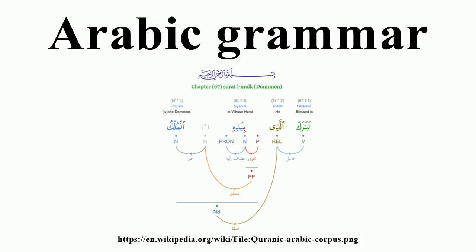Examples include: from kitab (book) — kitabi (my book), kutubi (my books), kitabay (my two books); from kalima (word) — kalimati (my word), kalimati (my words); from dunya (world) — dunyaya (my world); from qadin (judge) — qadiyya (my judge), qudati (my judges); from mu'allim (teacher) — mu'allimai (my teacher), mu'allimiyya (my teachers); from ab (father) — abuya (my father). Prepositions use iya even though in this case it has the meaning of 'me'. The sisters of inna can use either form, but the longer form is usually preferred. The second person masculine plural past tense verb ending changes to the variant form tumu before enclitic pronouns, e.g., katabtumhu (you wrote it).